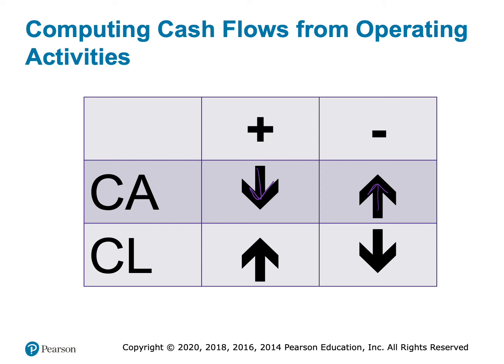Once I've done all the current assets, I flip over to the current liabilities section. For accounts payable, if it went down from last year to this year, it's because I paid that debt — that represents money I spent — so I want to subtract the amount of the decrease. For unearned revenue, if it went up, that means customers have paid me more money, so I want to add the amount of the increase. The rule for current liabilities is essentially the opposite of current assets.